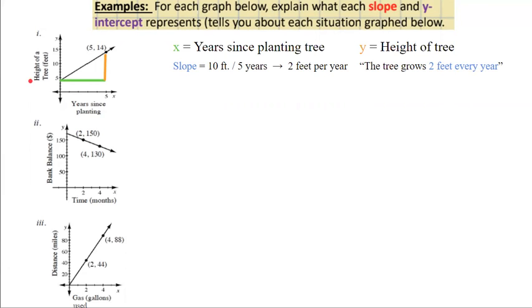The y-intercept, 4 feet, on the other hand, could be described as the tree was initially 4 feet tall when it was planted.